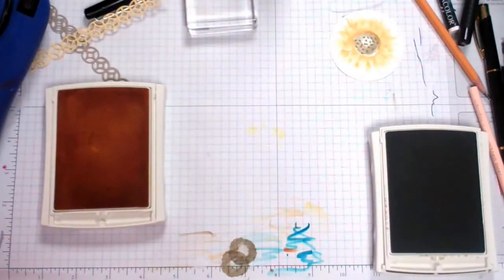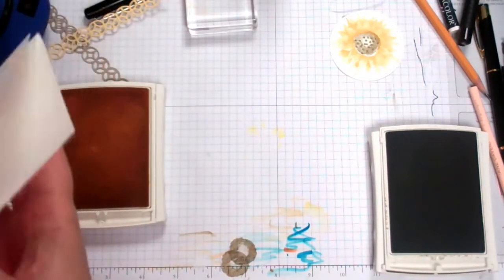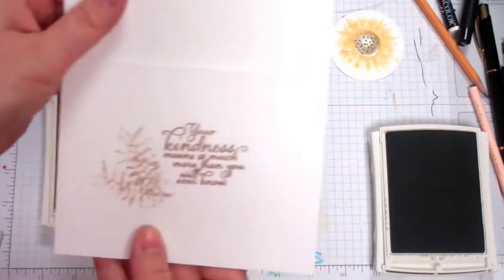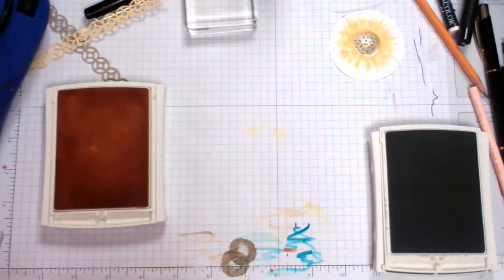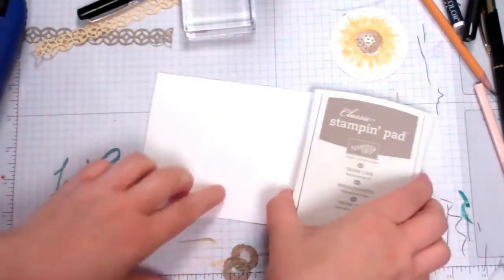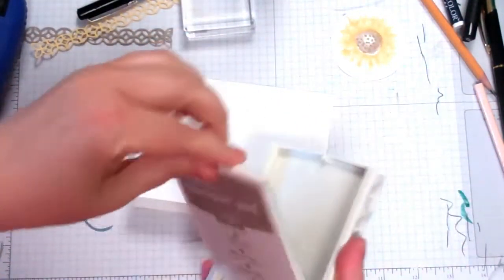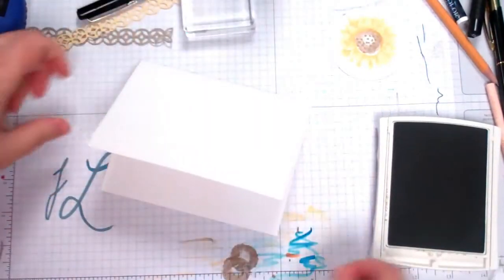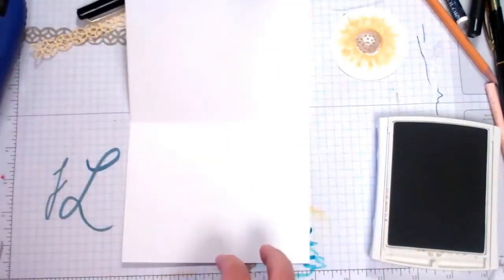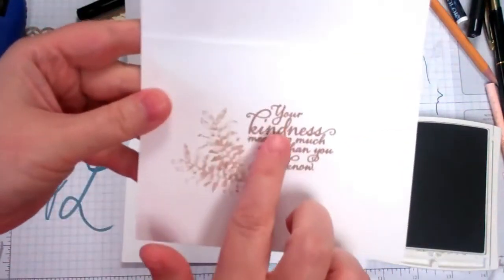Now we can go ahead and stamp the inside. My battery is about ready to go here. It says your kindness means so much more than you will ever know. So I've got my Crumb Cake here. My camera needed to be recharged and I had to do this in two episodes. For inside of our card, we're going to use this sentiment.